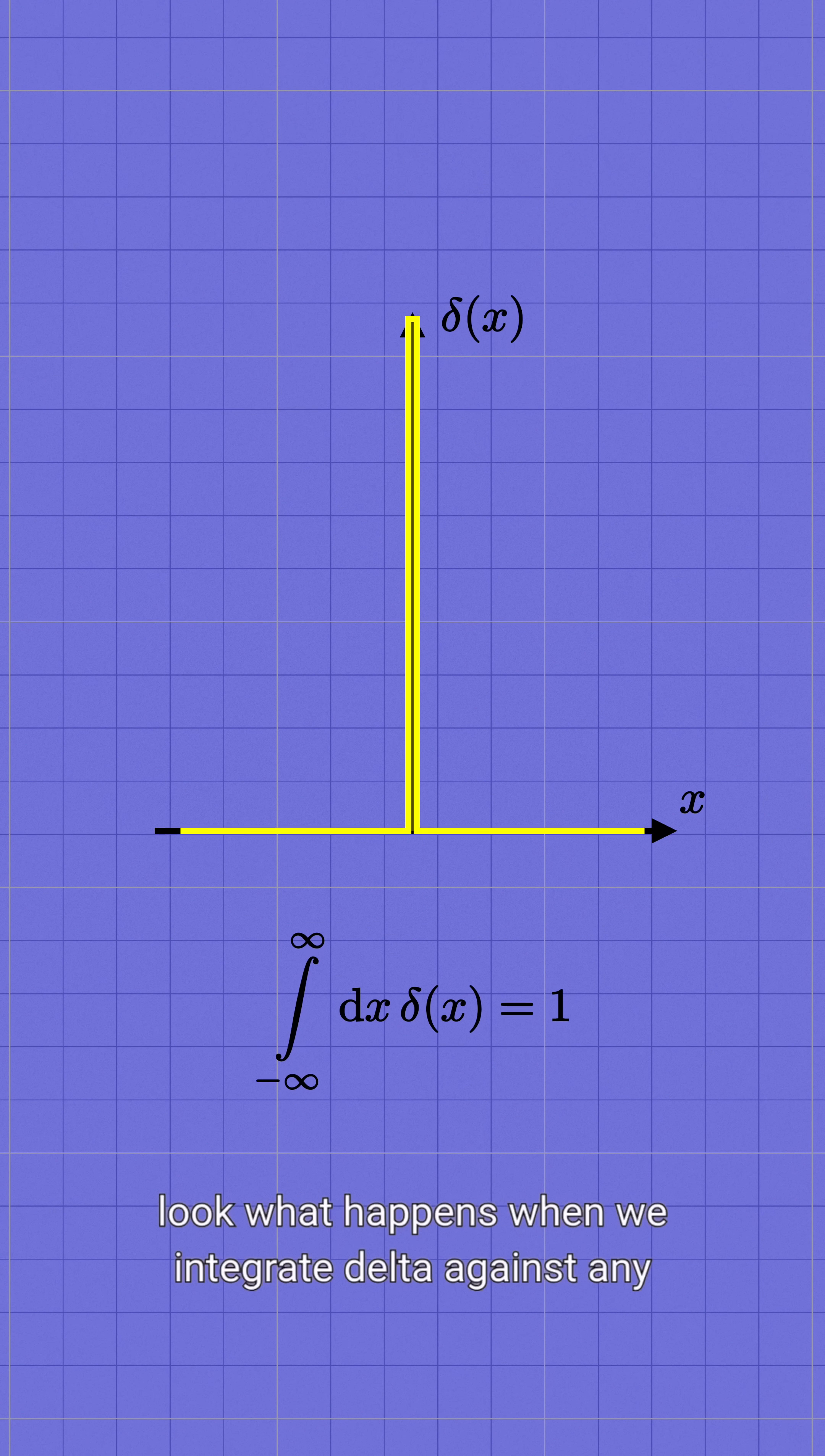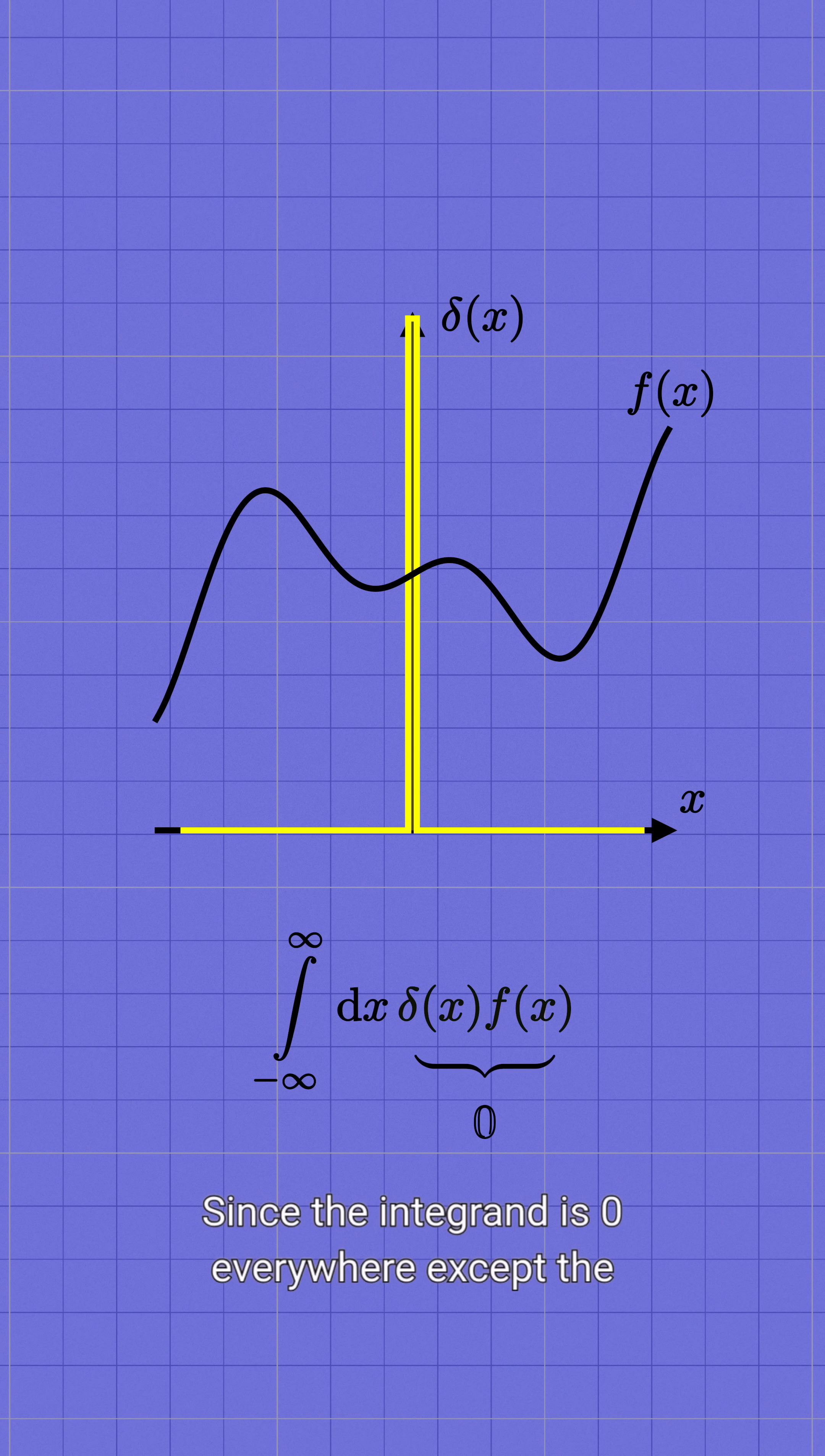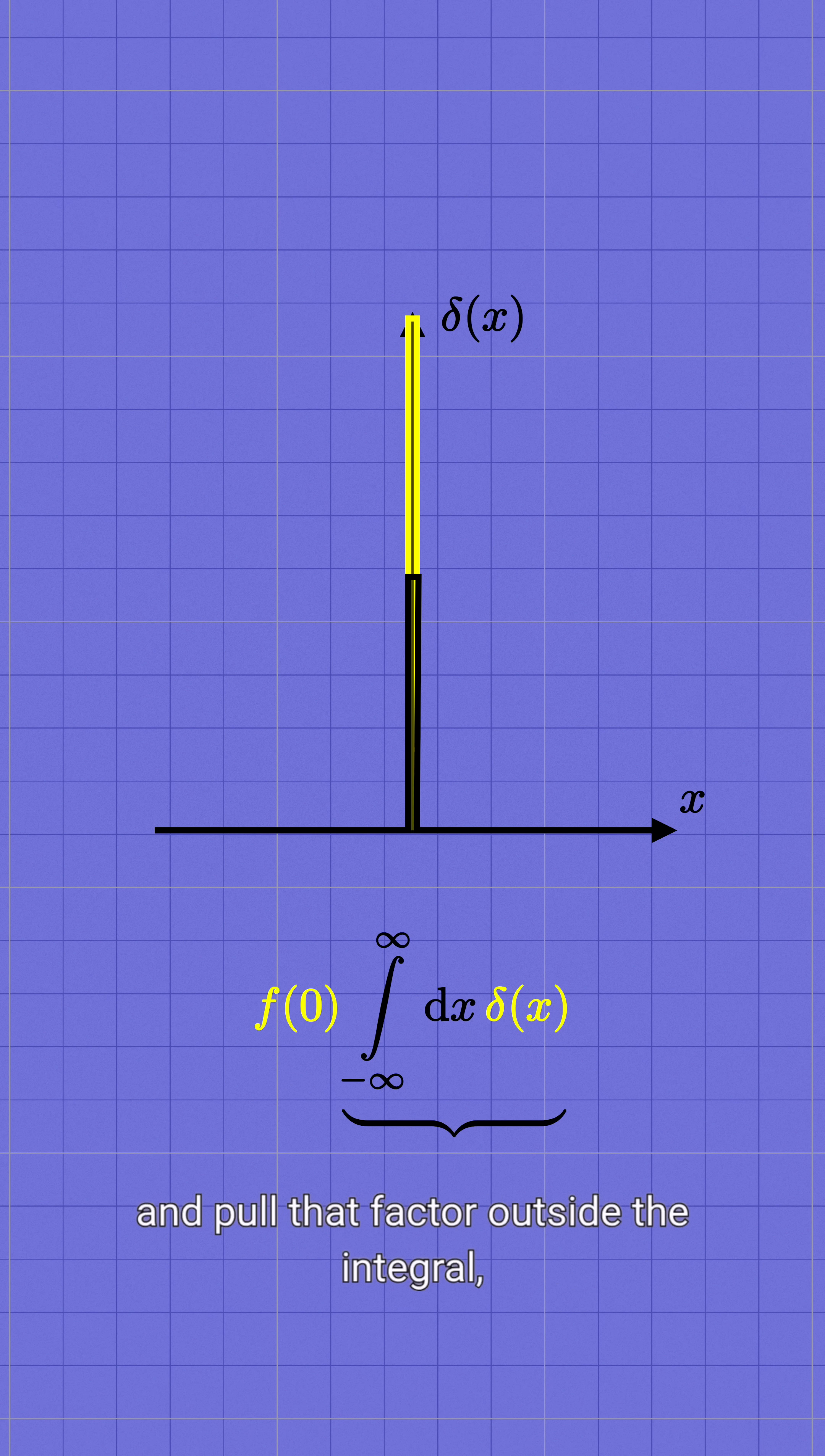More generally, look what happens when we integrate delta against any other function f of x. Since the integrand is 0 everywhere except the origin, we can replace f of x with its value at that point, and pull that factor outside the integral.